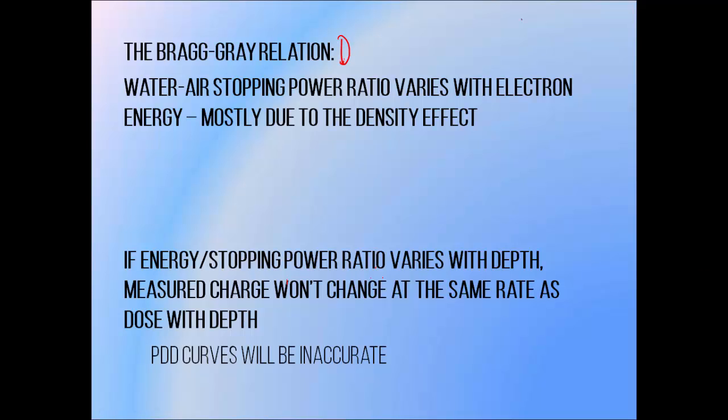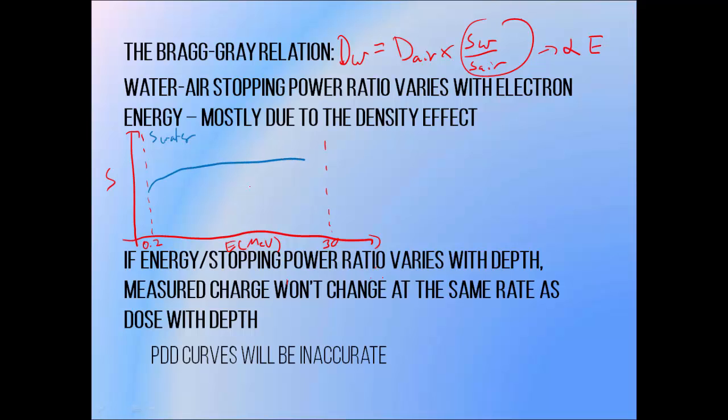The Bragg-Grey relation allows us to obtain dose to water from a measurement of dose to air by multiplying the dose to air by the ratio of stopping powers in water and air. I mentioned previously that this stopping power ratio varies with electron energy. Within a roughly clinical range of 0.2 MeV to 30 MeV, stopping powers tend to increase with energy. The water stopping power increases like this, and the air stopping power increases like this.